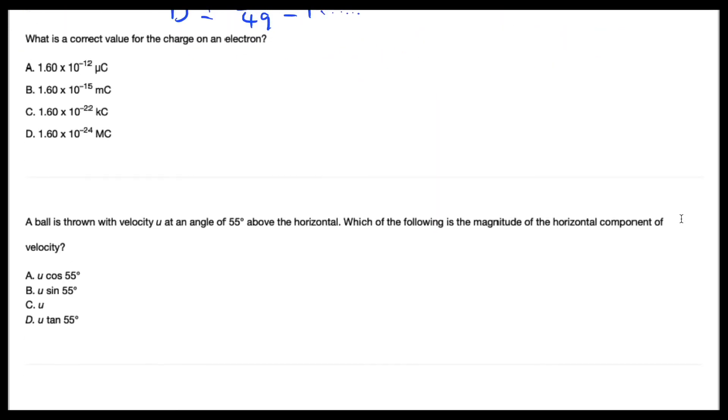What is the correct value for the charge on an electron? So 1.6 × 10⁻¹⁹ coulombs. For micro coulomb, you need to times 10⁻⁶, so A is not correct. For B, you need to times 10⁻³ power, which is also not correct. For C, you need to multiply by 10⁻³. So C is the correct answer.